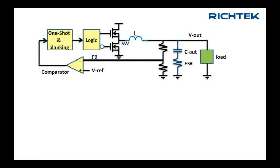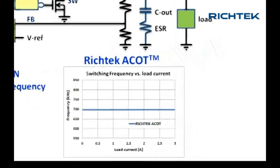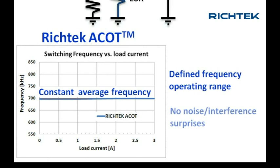To solve this frequency variation problem, RichTech's advanced COT has added a frequency locked loop system, which slowly adjusts the on-time without influencing the fast transient behavior of the COT topology. The result is a virtually constant average frequency in all operating conditions, which helps to avoid noise and interference issues due to changing frequencies.